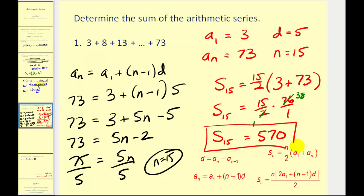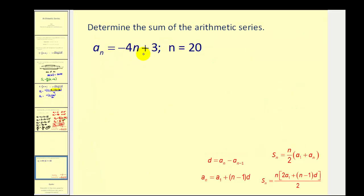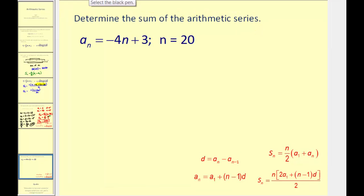Let's go ahead and take a look at another example. Here we're given the formula for an arithmetic sequence and we want to find the sum of the arithmetic series that it creates. So again looking at our partial sum formula we want the sum of the first twenty terms since n is twenty and that's going to be equal to n divided by two times a sub one plus a sub n. So let's go ahead and write down all the information that we know. We know n is twenty.